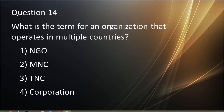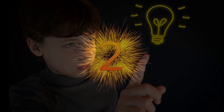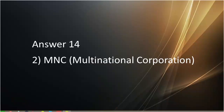Question number fourteen: What is the term for an organization that operates in multiple countries? First is NGO. Second is MNC. Third is DNC. Fourth is corporation. Answer to question number fourteen is MNC, which is multinational corporation.